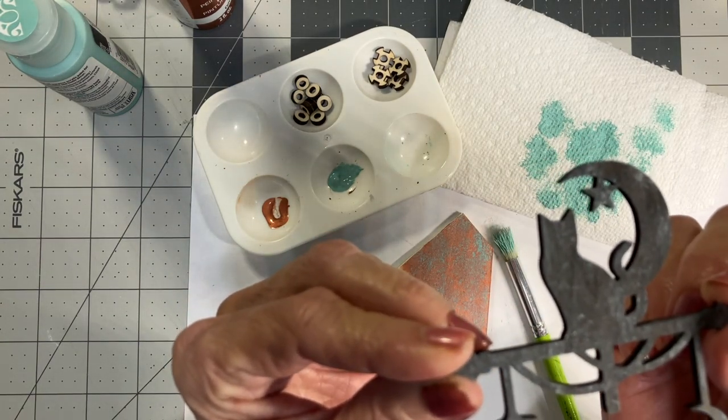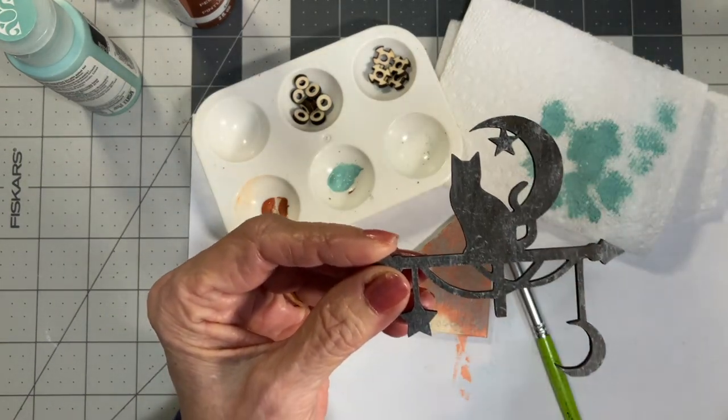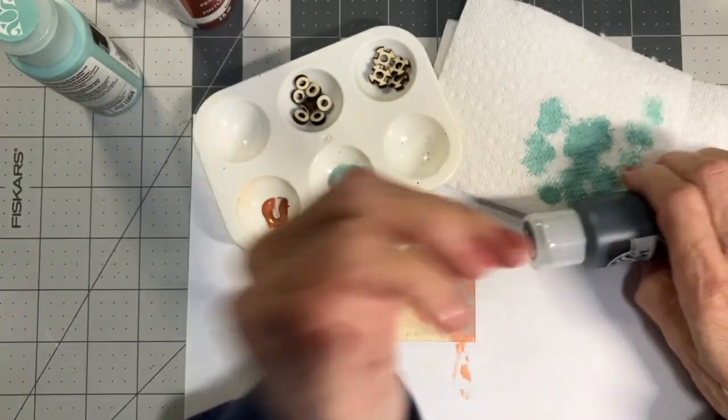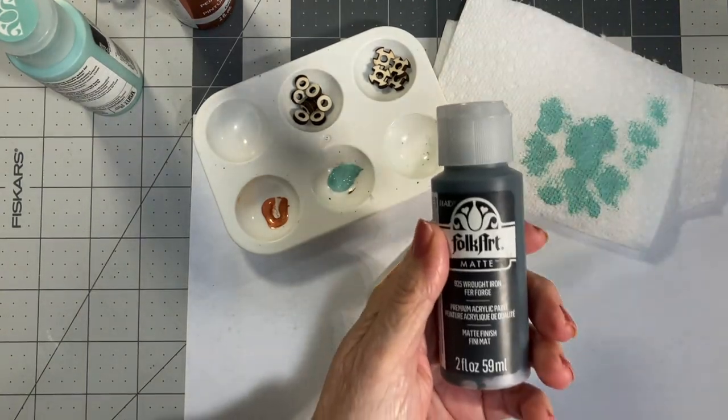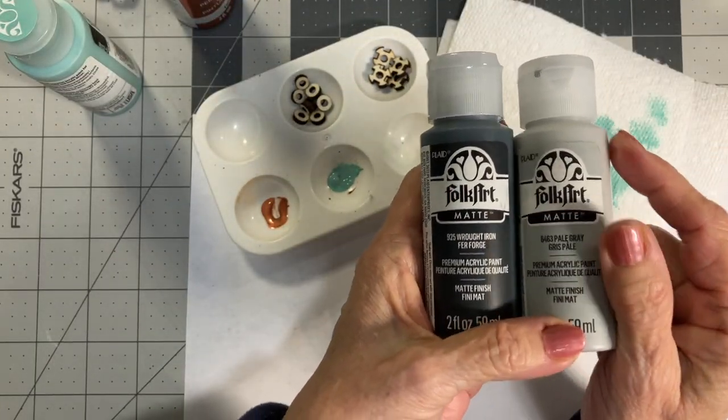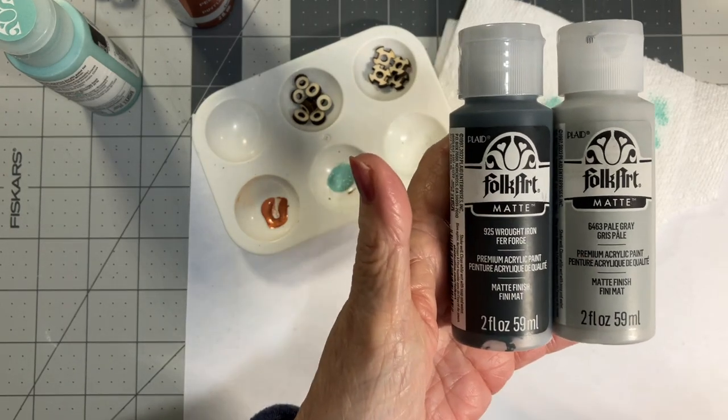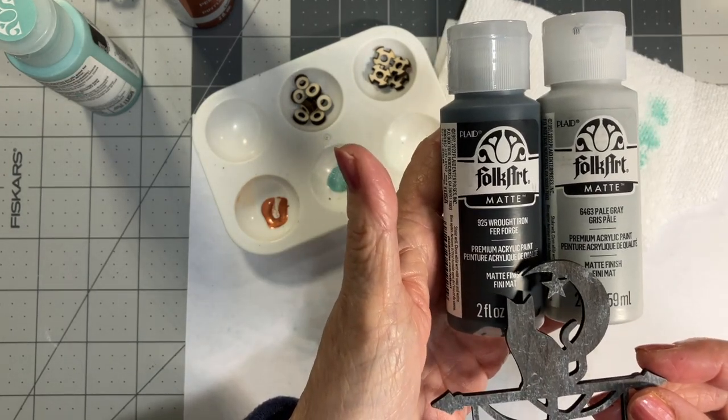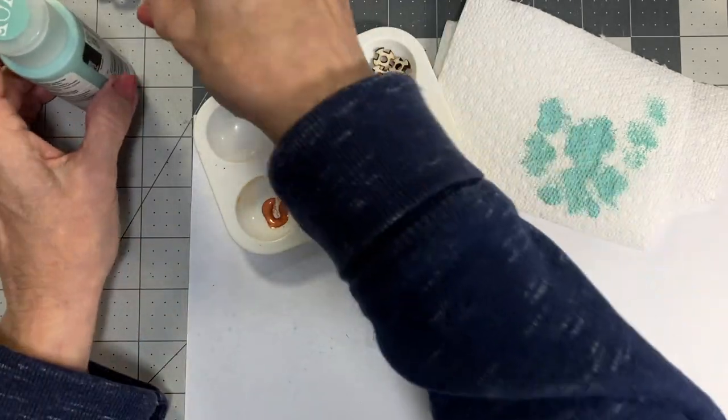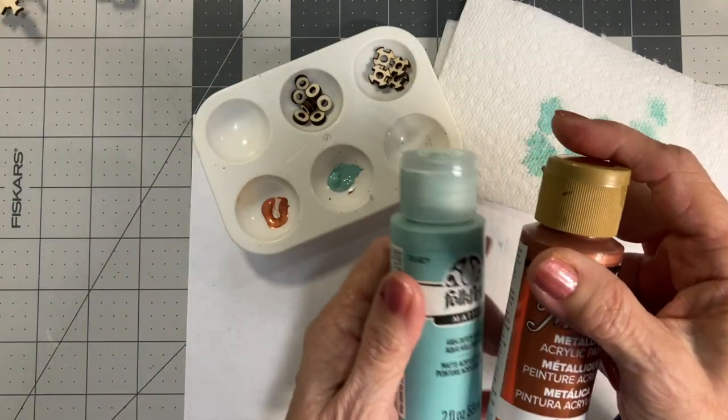The black has been painted black with gray stippled on top and I used a wrought iron paint from FolkArt and a pale gray to create the black aged finish. And here you go.